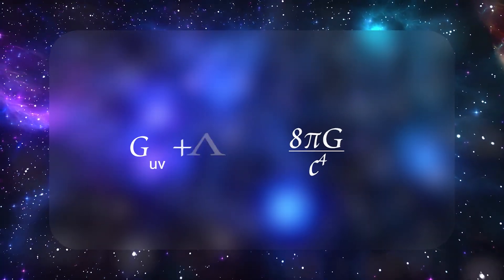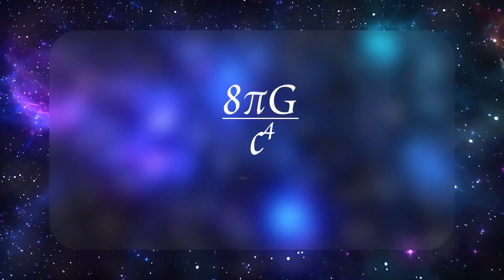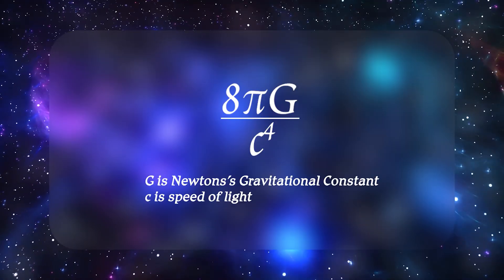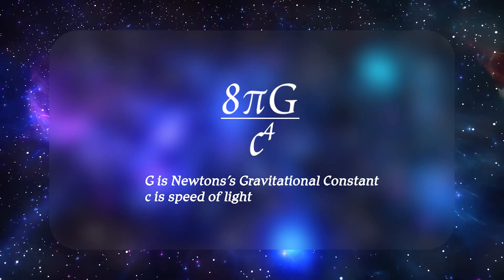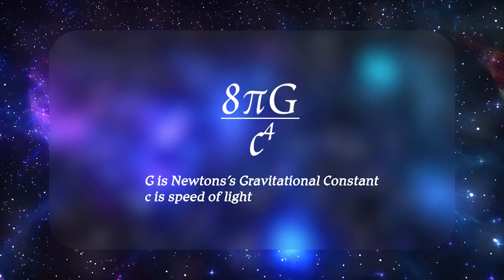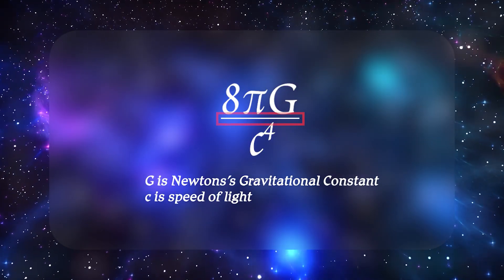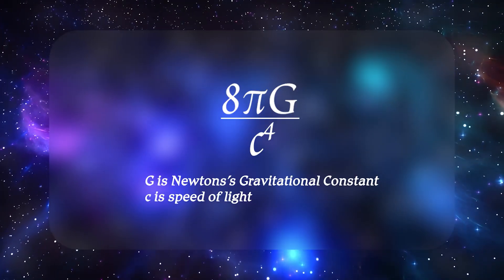Moving to the right-hand side, we see a set of universal constants that keep the equation balanced. It includes Newton's gravitational constant from classical gravity, the speed of light, and pi. The fraction ensures that when we measure mass or energy, we convert it properly into geometric curvature.